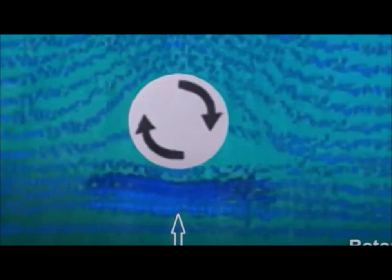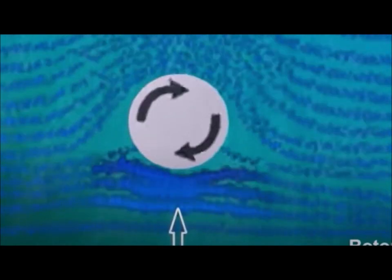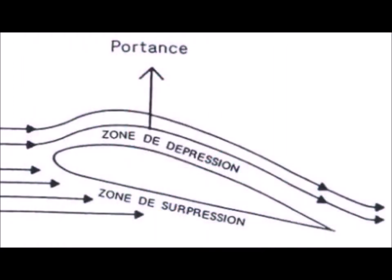The rotation causes an asymmetry of the fluid flow around the body which explains the Magnus effect in the same way as lift for asymmetric profiles. These phenomena result from the pressure difference around the profile or the body rotating on itself.